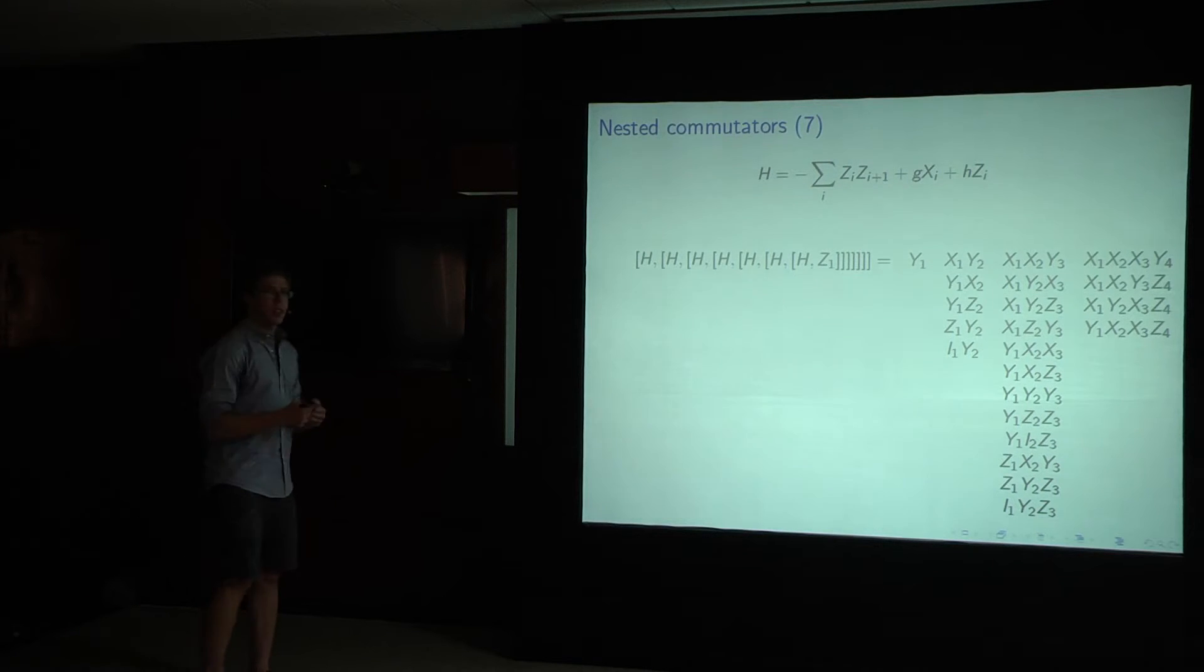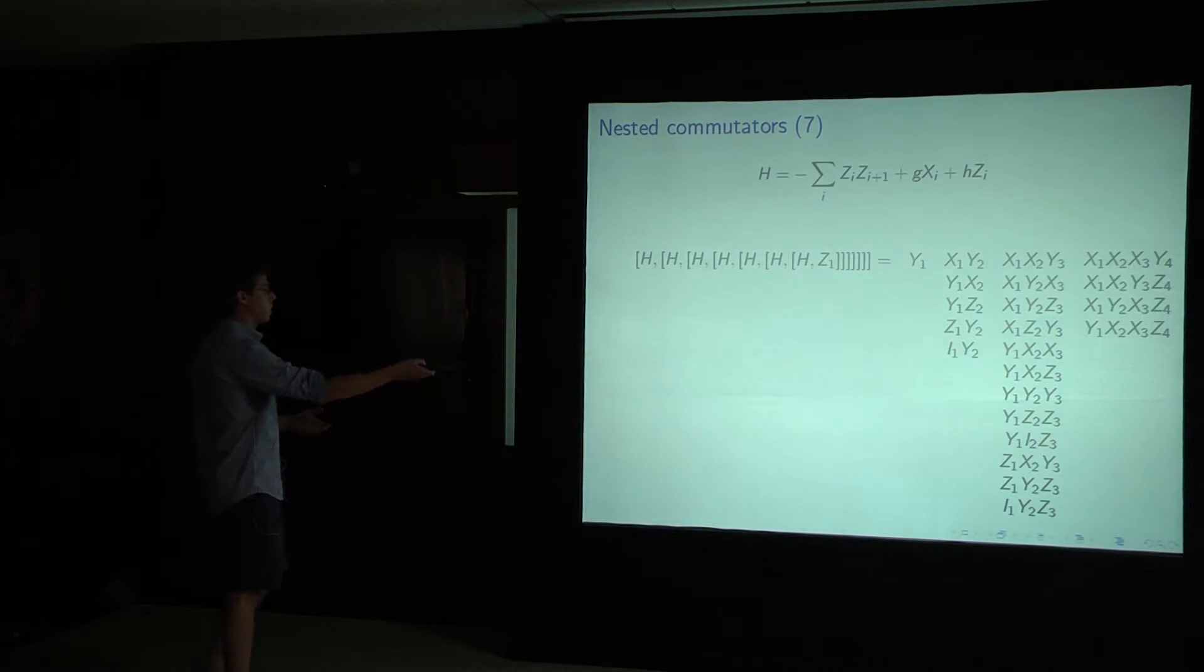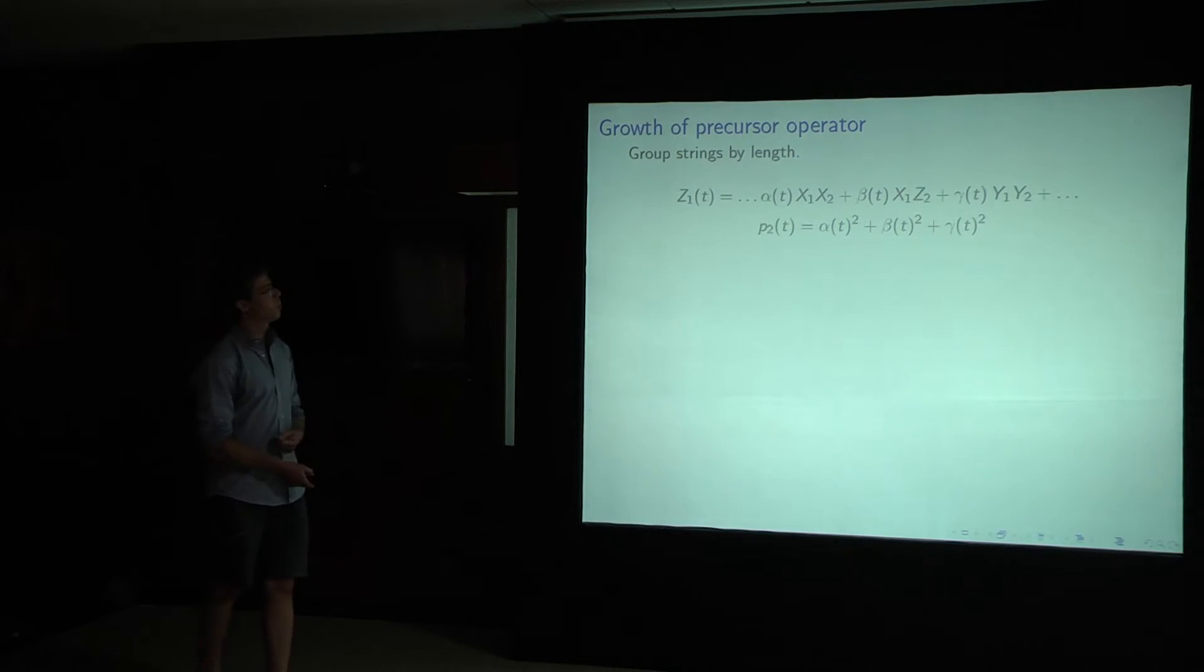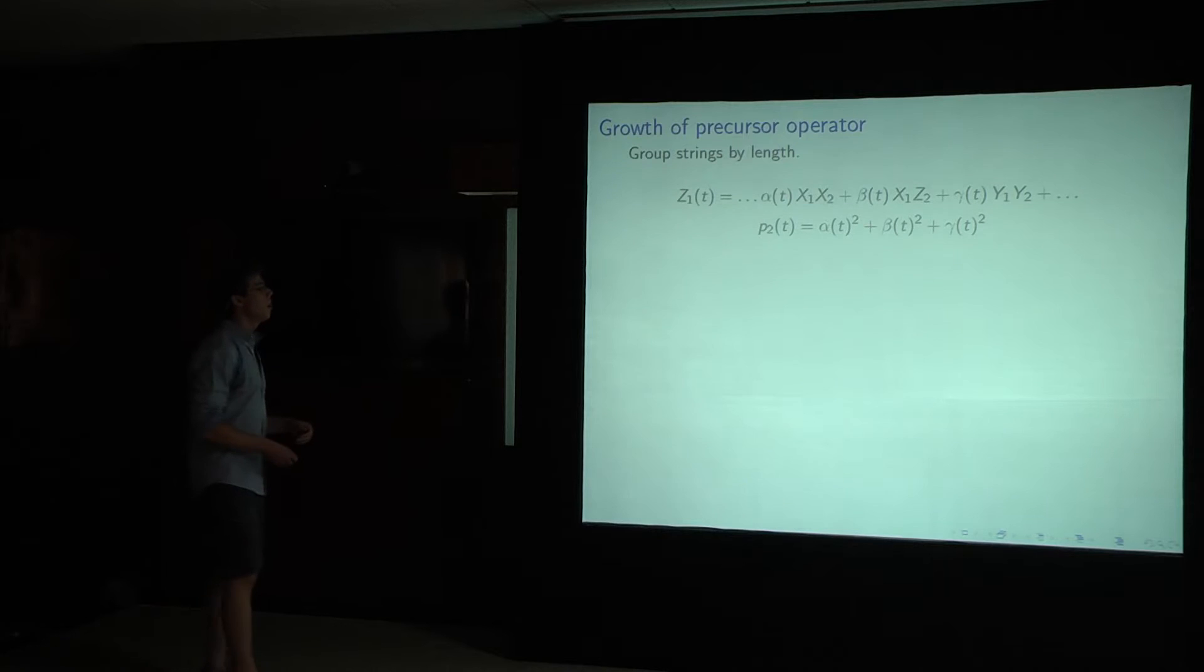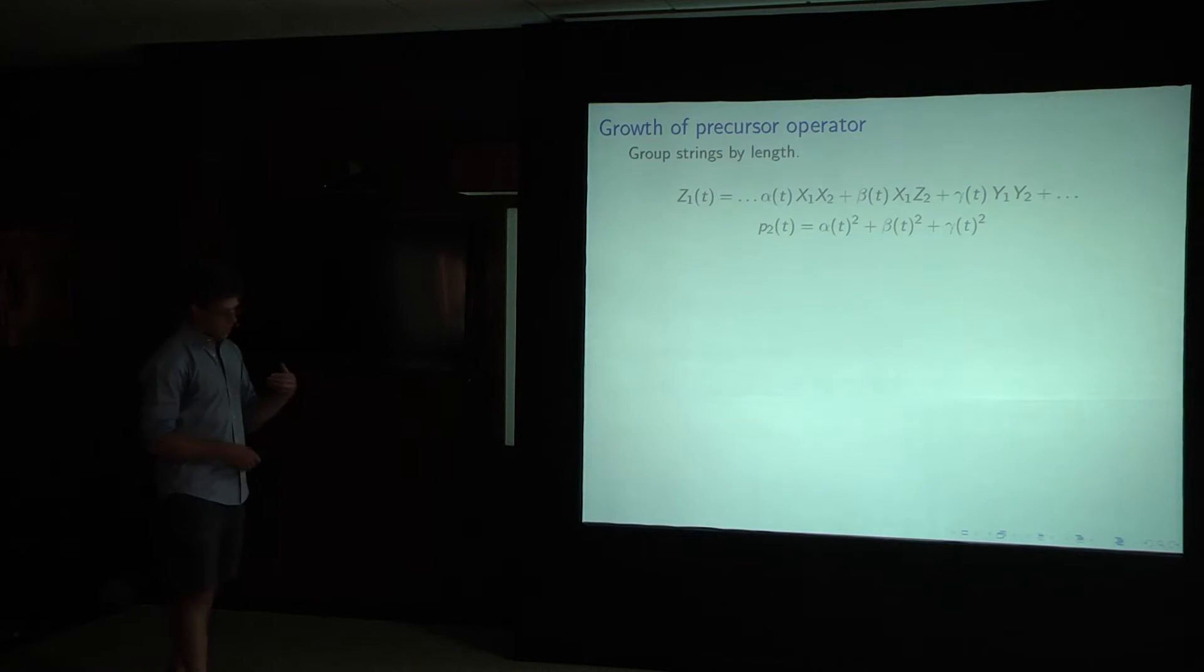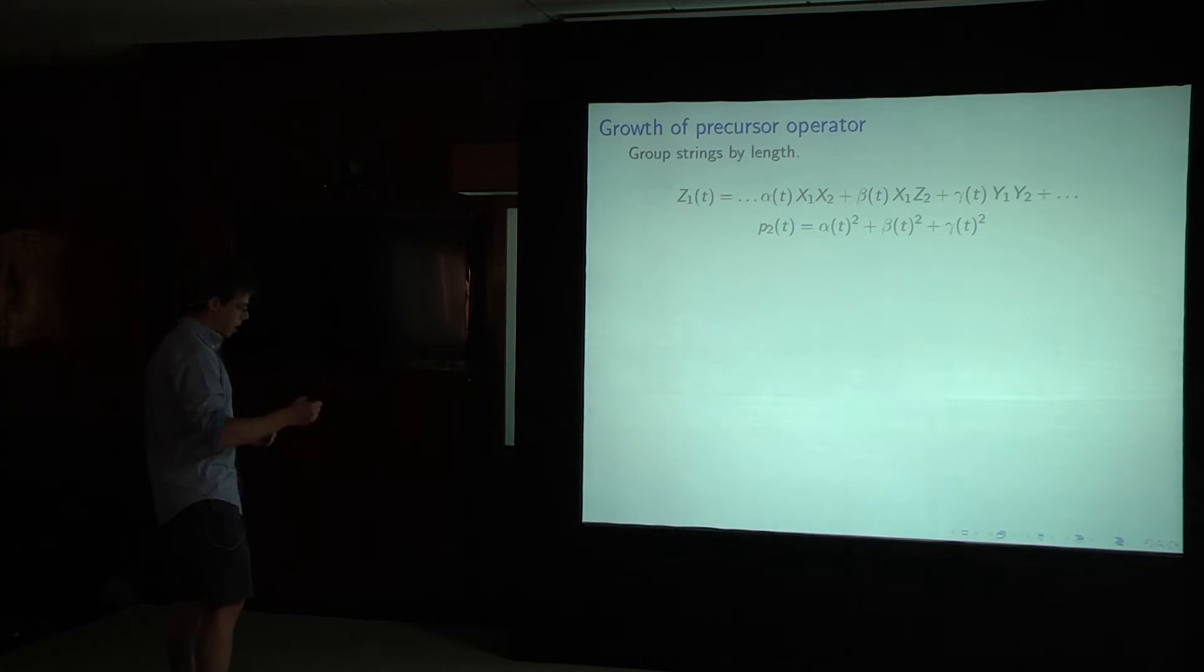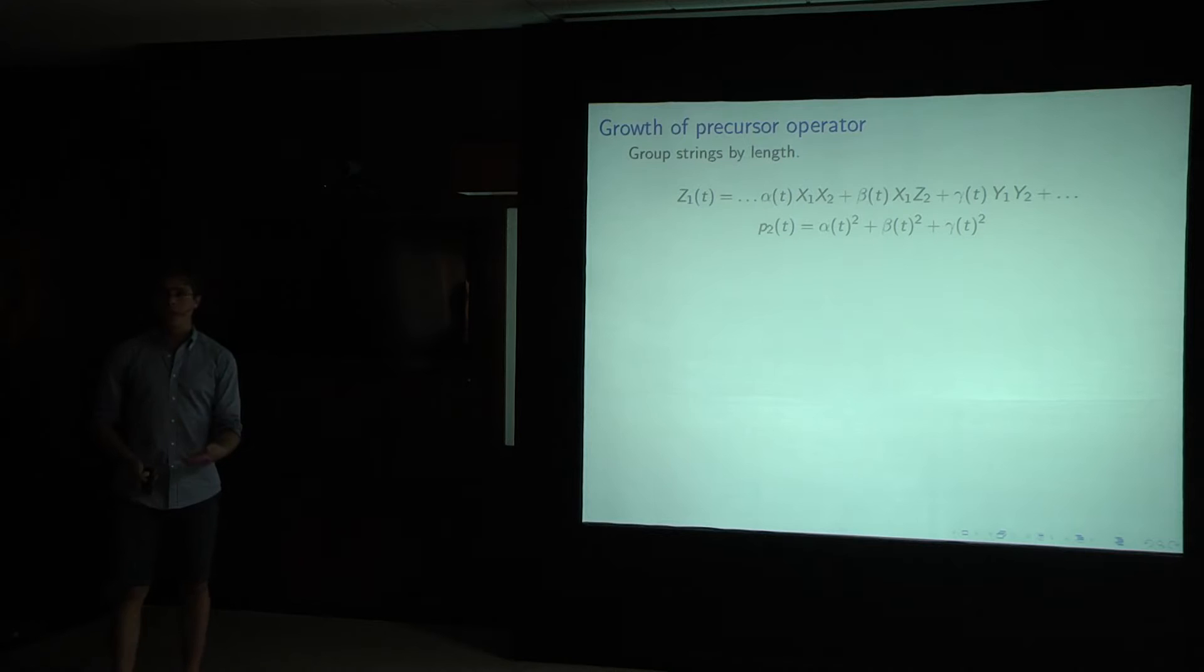What we're really interested in studying, so this tells us that as terms later in the expansion become more important, our operator starts to look disorganized like this. In order to actually understand the time evolution, we should restore the time dependence. So one natural thing we can do is we can group the strings by their length. So here's an example where I have strings, I've isolated the strings of length 2. And they have time dependence alpha, beta, gamma. I square them, sum them. And this p of 2 gives me the time dependent weight of finding a string of length 2 within this operator. The reason I square them is that for summing this over all such string length is a nice quantity that's conserved under time evolution. So I can do this for all different string lengths.